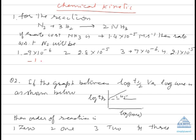So we can write dN2/dt is equal to half times dNH3/dt. Now the value of the rate with respect to ammonia has been given to you.